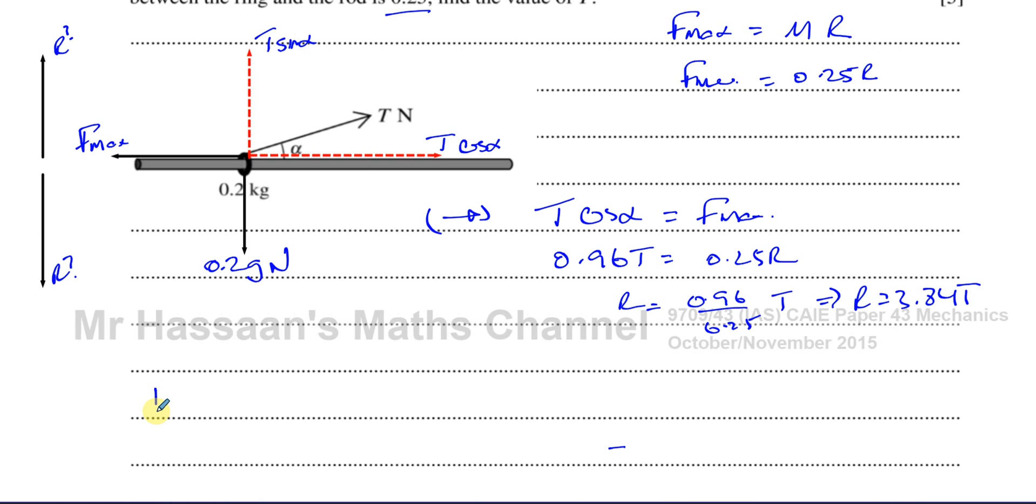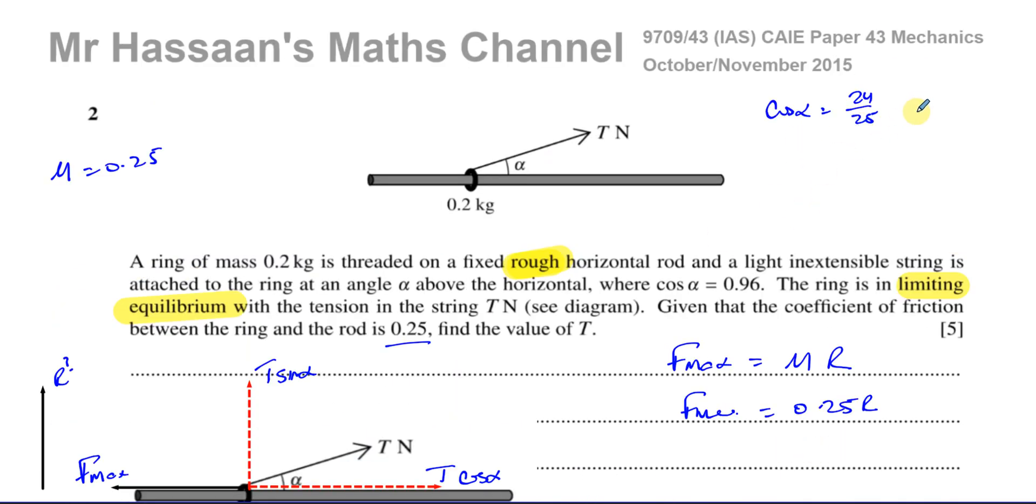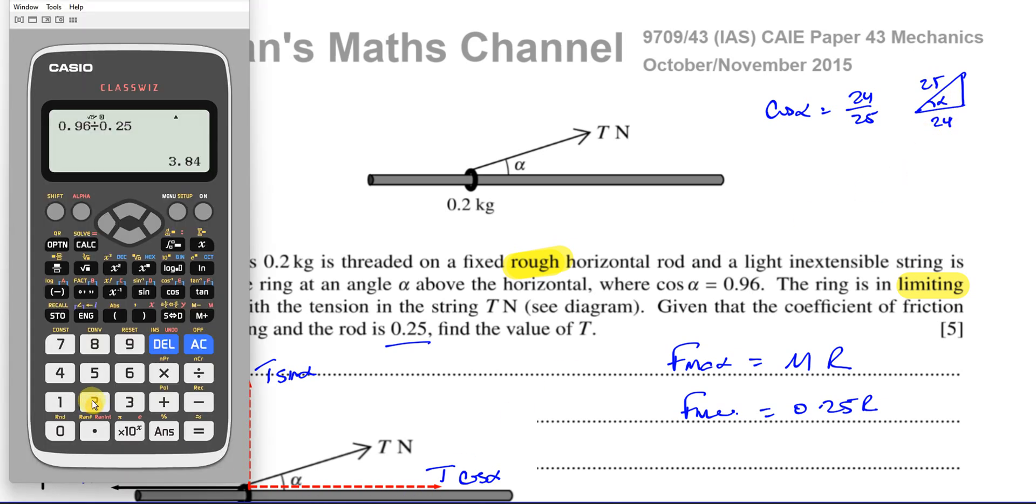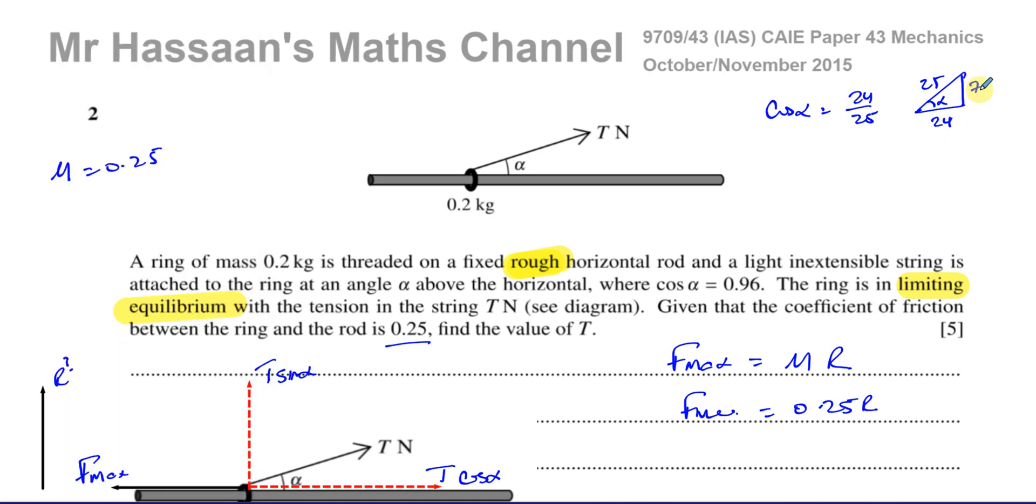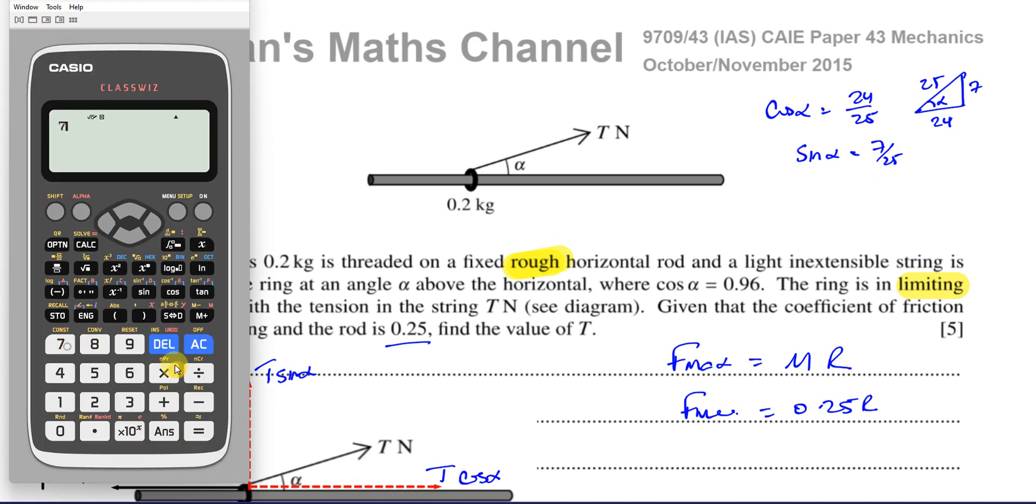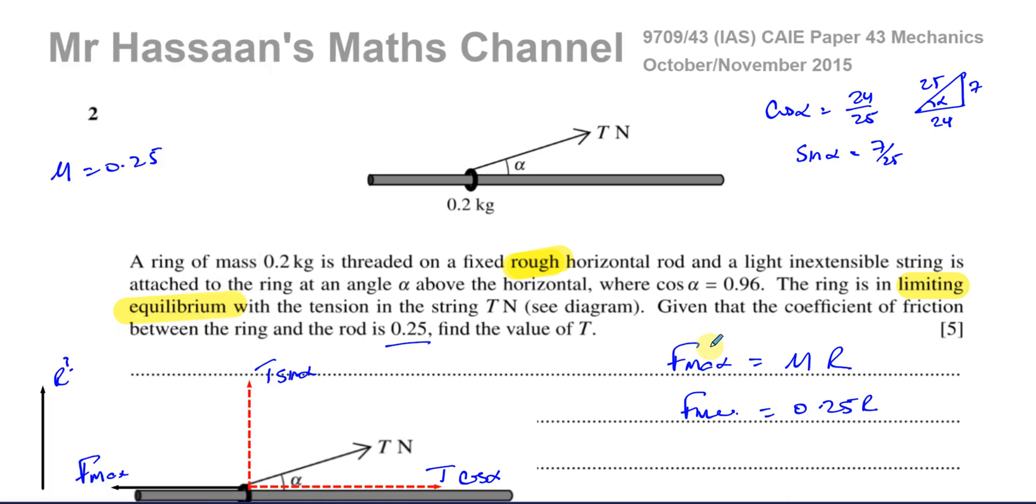Now we're going to resolve the forces vertically. This is where we'll be able to tell what's happening. Upwards we got T times the sine of alpha, and we also got 0.2 g acting in the other direction, so 0.2 g is going to be two newtons. Now I'm going to find out what sine alpha is. We know that cosine alpha is 24 over 25. If that's alpha, cosine of alpha is adjacent over hypotenuse, and the opposite side is going to be 25 squared minus 24 squared, which gives us 49. Square root of 49 is 7. Therefore, we can say the sine of alpha is going to be 7 over 25, which is 0.28.